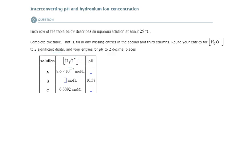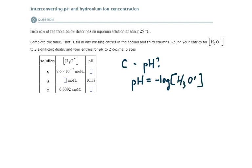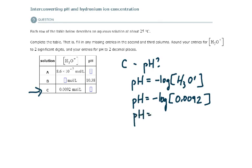For solution C, we need to find the pH again. pH equals the negative log of the hydronium ion concentration given for solution C. The pH comes out to 2.036, and rounded to two decimal places — two significant digits — that would be 2.04.